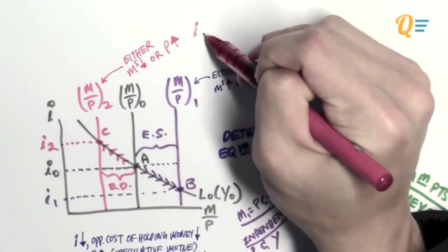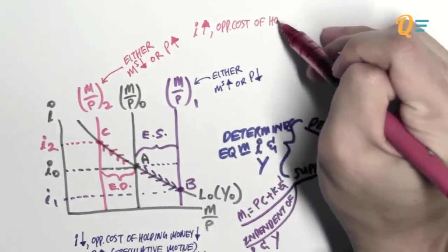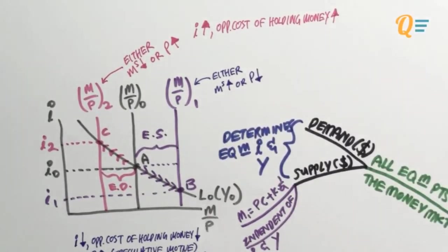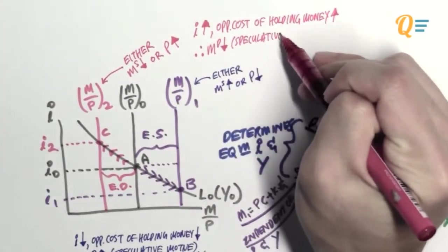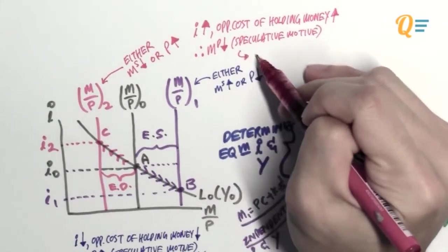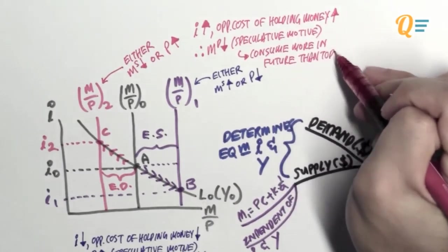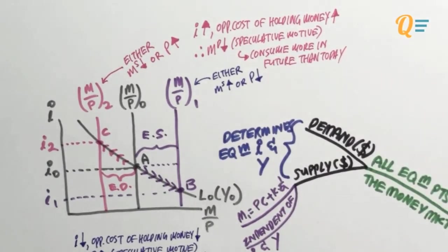The equilibrium interest rate is now at I2. The intuition behind this is that when the interest rates rise, the opportunity cost of holding money rises as well. Therefore, the demand for money is going to fall, and again this is the speculative motive in play. People would want to consume more in the future than today. If where I'm putting my money is earning me more interest now, I would just leave that money there so that it makes me more interest income, so that in the future I can withdraw it and spend more.